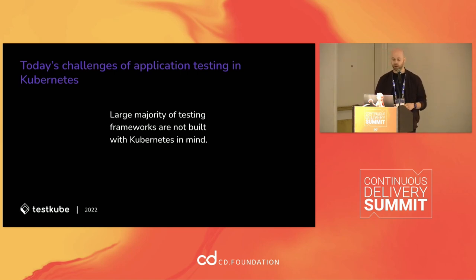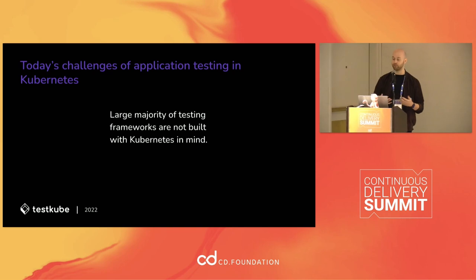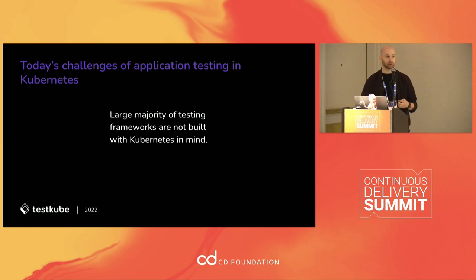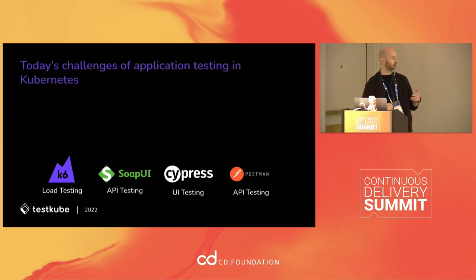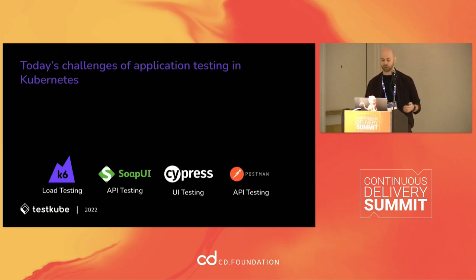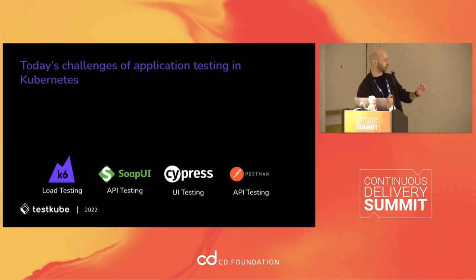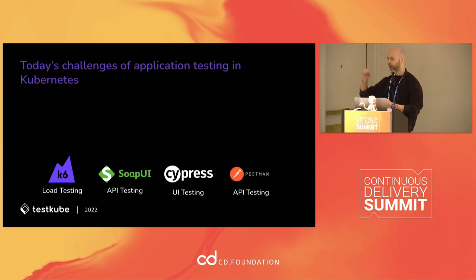If you use different tests in Kubernetes, you might use different tools depending on the type of tests. You might test APIs, UIs, and do a bunch of things. One of the big problems with those tools is they are not made from the ground up to run inside the Kubernetes cluster. They are not made with Kubernetes in mind. For example, k6 is a really great tool for load testing, SOAP UI for API testing, Cypress for UI, Postman — these are very good tools for their use cases.